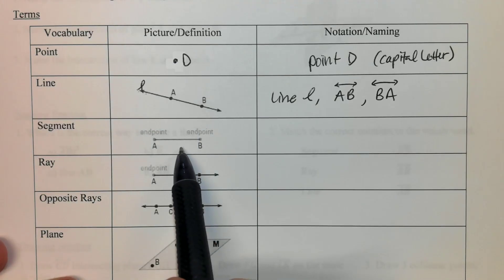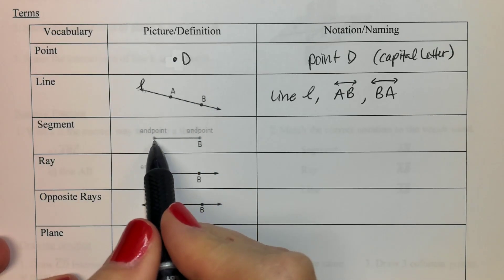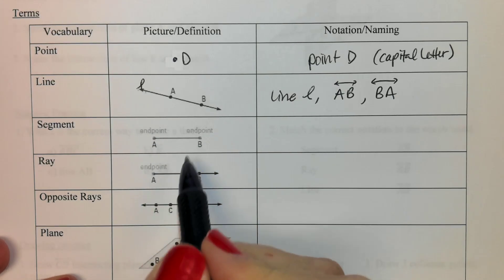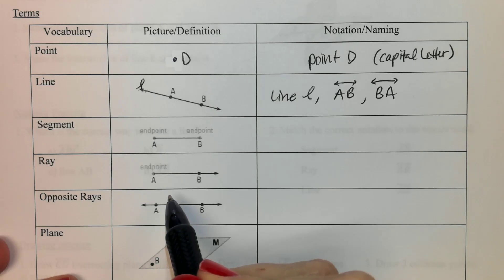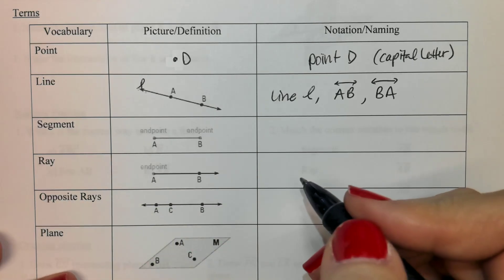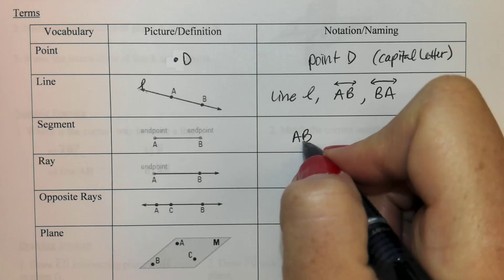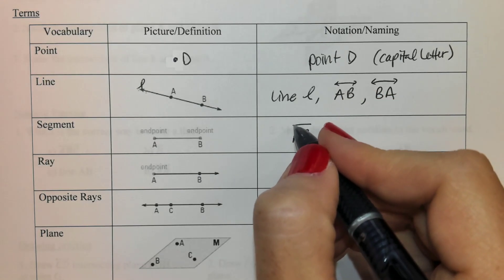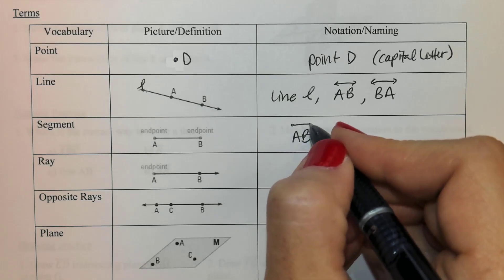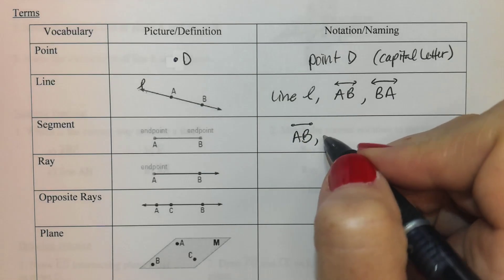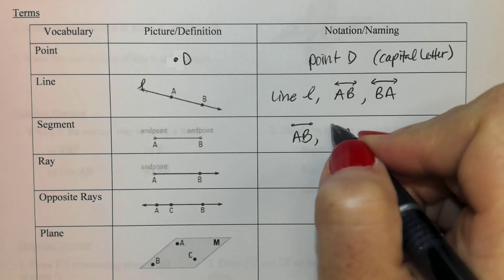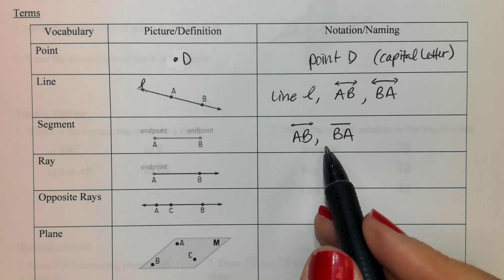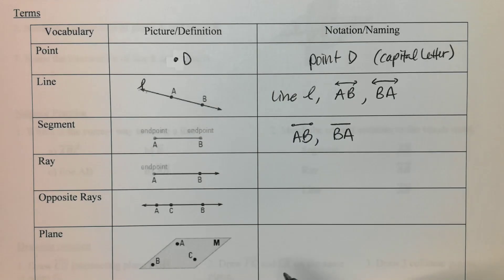Next up is a segment. The difference between a line and a segment is there are no arrows — segments have two endpoints. It ends here and it ends here, so there are stops on a segment. The notation: you would still use A and B, but instead of a line with arrows, you draw one with no arrows. You can put dots on it so everyone knows it's a segment. You could write it as AB or BA — it doesn't matter whether or not you add the dots.